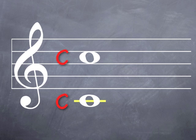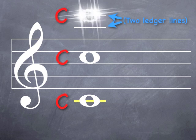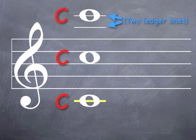Our final C is located way above the treble staff. It's so far above the treble staff that we have to add two ledger lines to make it all the way up there. We'll call this note high C.